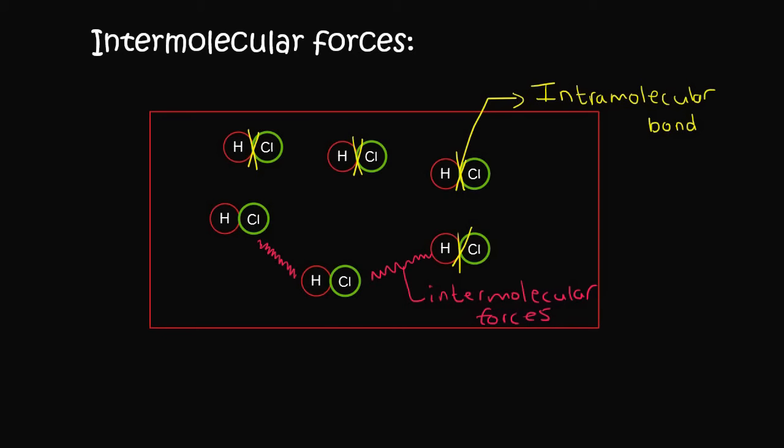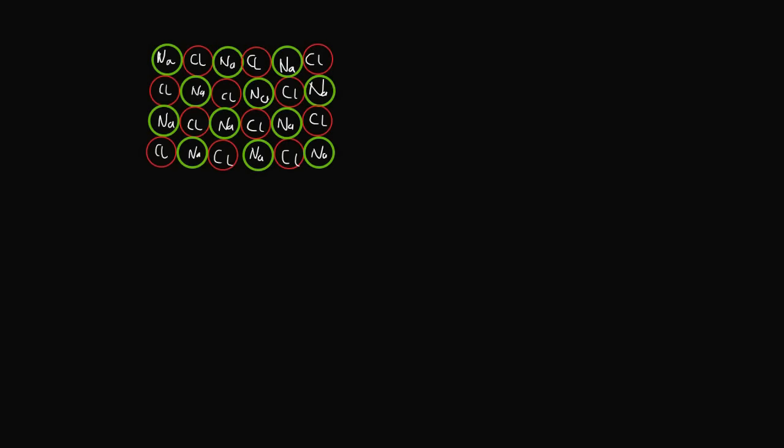We also said that ionic and metallic substances do not have intermolecular forces. The reason for that is that if you look at something that is ionic, for example sodium chloride, it bonds like this. It forms a big structure like this, which we call a crystal lattice.